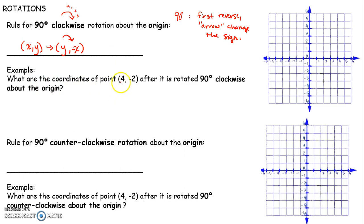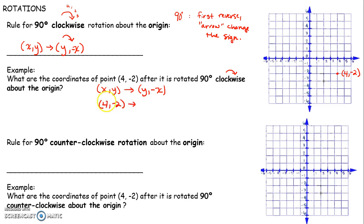What are the coordinates of (4, -2) after it's rotated 90 degrees clockwise about the origin? I apply my rule: x, y becomes y, negative x. First reverse: I write -2, 4. Then arrow clockwise, change the sign — so I know it becomes -2, negative 4.